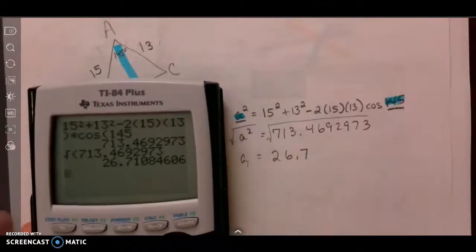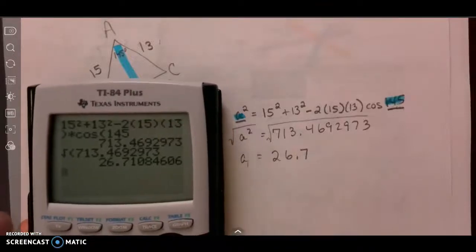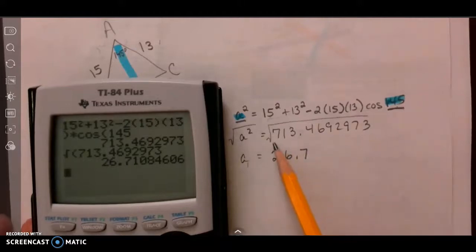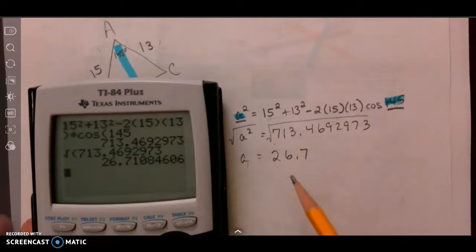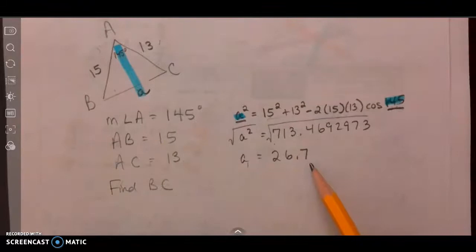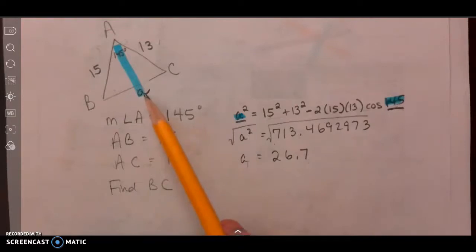Our last video got cut off, and when you take the square root of the number we have here — done in my calculator — you get approximately 26.7. As you can see, it's much less work with Law of Cosines when you're finding a side versus an angle.